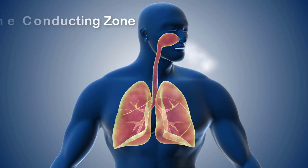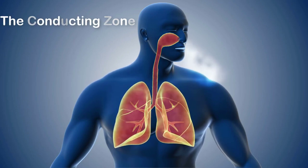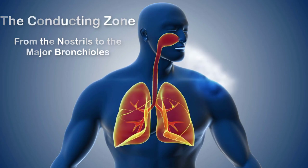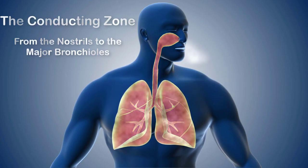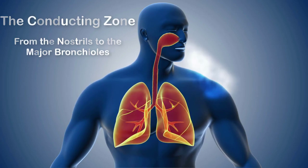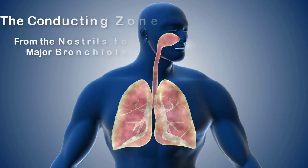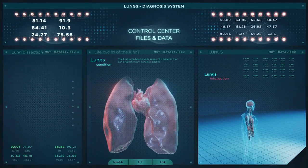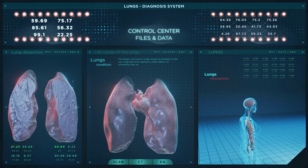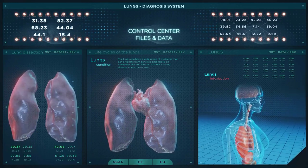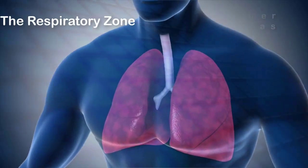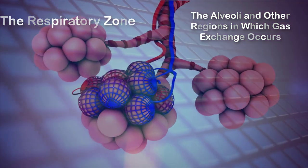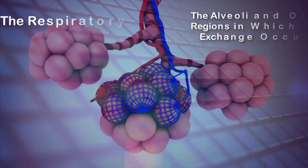The conducting zone of the respiratory system consists of those passageways that serve only for air flow. Essentially, this is from the nostrils through the major bronchioles. The walls of these passages are too thick for adequate diffusion of oxygen from the air into the blood. The respiratory zone consists of the alveoli and other gas exchange regions of the distal airways.